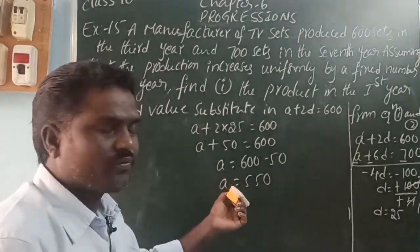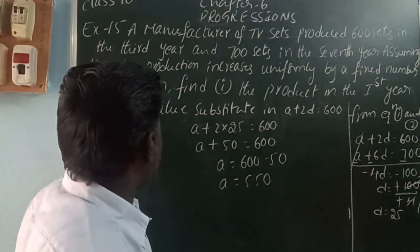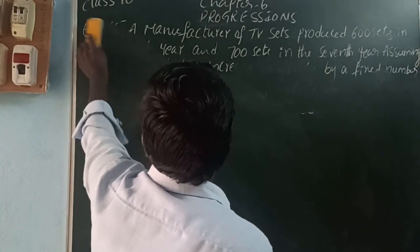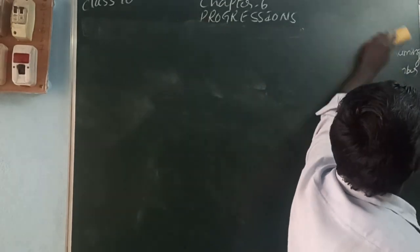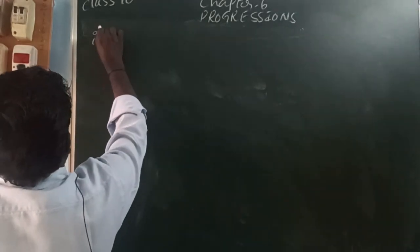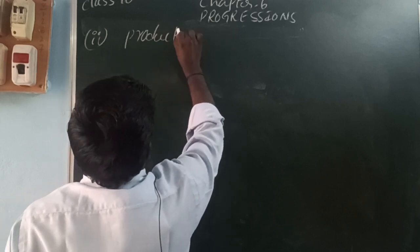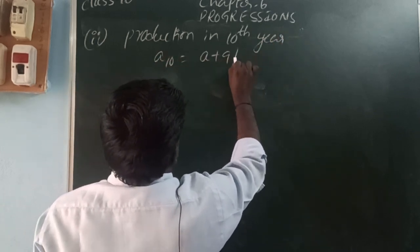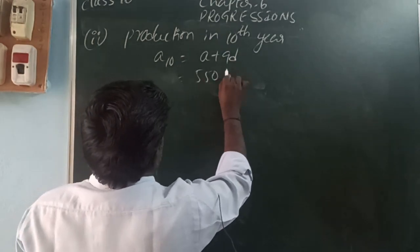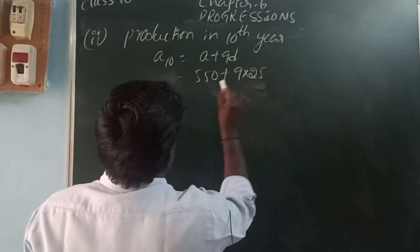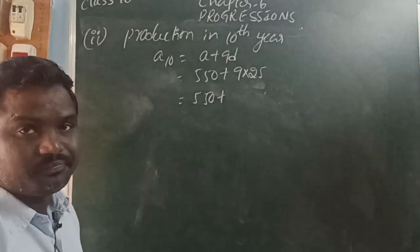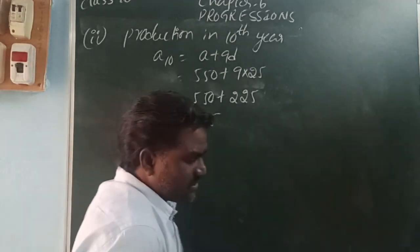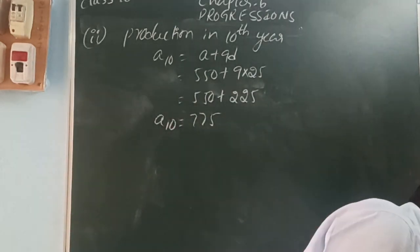The second question asks for the production in the 10th year. a10 = a + 9d = 550 + 9×25 = 550 + 225 = 775. So production in the 10th year is 775 sets.